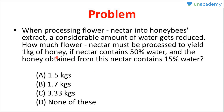To understand this: when flower nectar is processed, a considerable amount of water gets reduced. We need to determine how much flower nectar must be processed to yield 1 kg of honey, given nectar contains 50% water and honey contains 15% water. The key point is that water is being reduced during conversion.